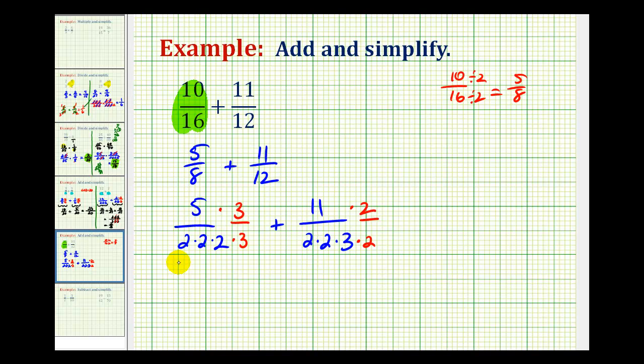So now let's go ahead and rewrite these. This would be 15 over 2 times 2 times 2 times 3, that's 24, plus over here we're going to have 22 again all over 24.